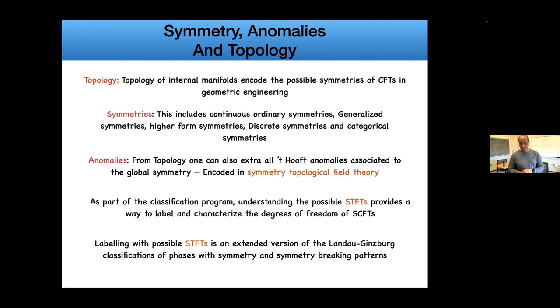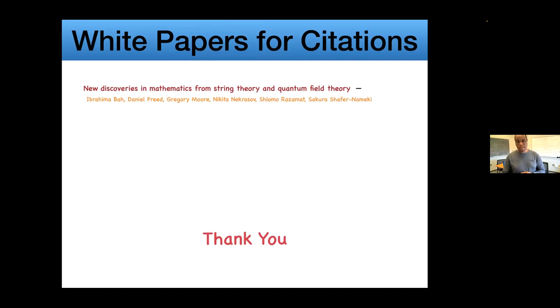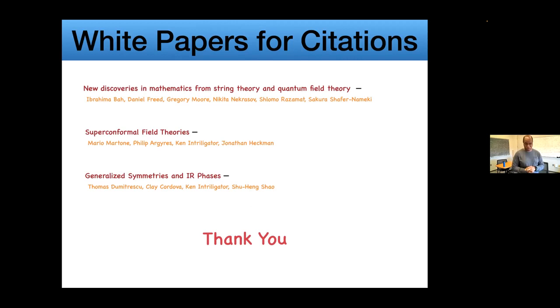With this I will end. There's one more set of ideas which have emerged quite recently related to symmetry. Now that you have a classification, how should you label theories? It turns out one excellent way to label them is to understand all the symmetry structure of such a theory and the various anomalies associated with them. This is called a symmetry topological field theory, and these are computable and something you can study directly from geometric construction. The topics I've described appear in various white papers that exist, one I'm involved with with Dan Freed, Greg Moore, and others, and also the superconformal field theory ones, which is very important that everyone should read.